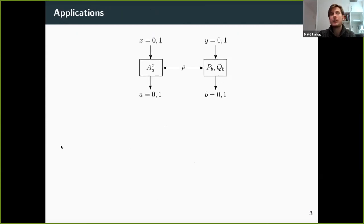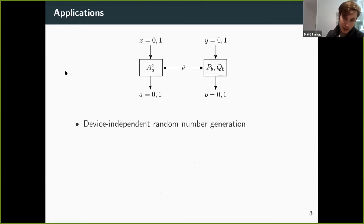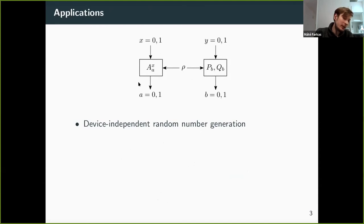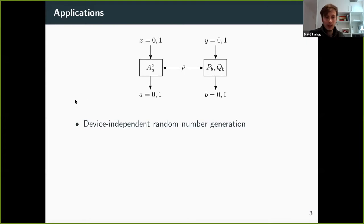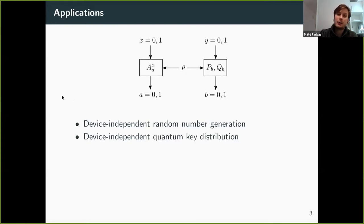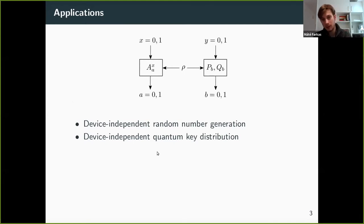These self-testing results are connected to applications. Whenever we observe the maximum violation or even close to the maximum violation, this can be used for device-independent random number generation — based on the outcome statistics and the Bell violation, assuming the correctness of quantum theory, Alice and Bob can extract secure random numbers that appear random to any potential eavesdropper. Even stronger results show that these random numbers are correlated, and this can then be used for device-independent quantum key distribution. These are quite well-established results.